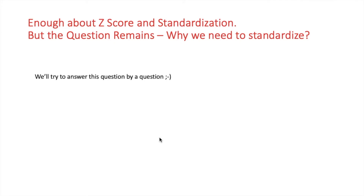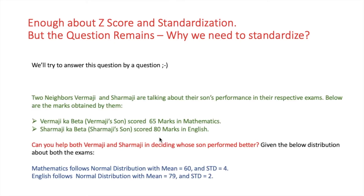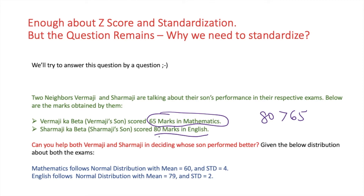We'll try to answer this question with an example. There are two neighbors, Wamaji and Sharmaji, talking about their sons' performance in their respective exams. Wamaji's son scored 65 marks in Mathematics, while Sharmaji's son scored 80 marks in English. Since 80 is greater than 65, Sharmaji claims his son scored better. Mathematics follows a normal distribution with mean 60 and standard deviation 4, whereas English follows a normal distribution with mean 79 and standard deviation 2.